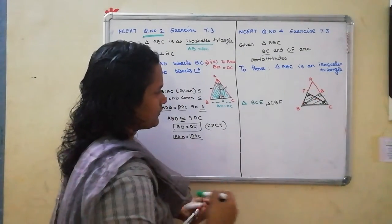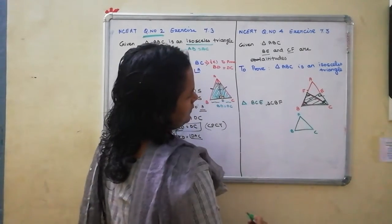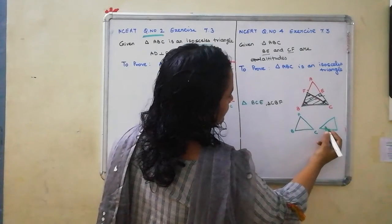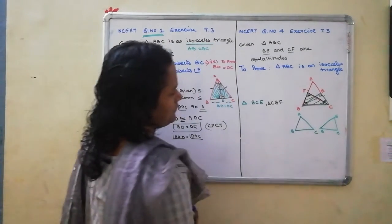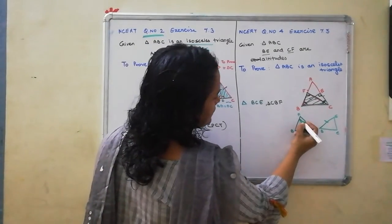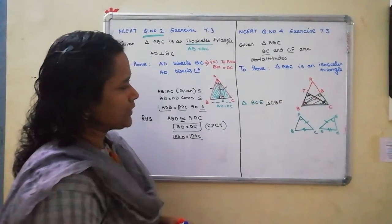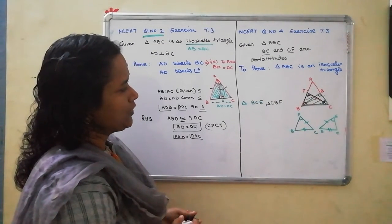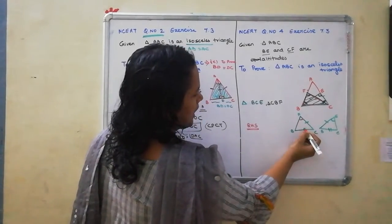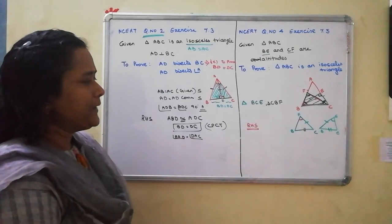Drawing separately: triangle BCF and triangle BCE. The altitudes CF and BE are equal. The angles are 90 degrees. And the base BC is common. The opposite side represents the hypotenuse. Therefore we are going to use the RHS rule here. One angle is 90 degrees, the hypotenuse BC is equal and common, and one of the sides CF equal to BE.